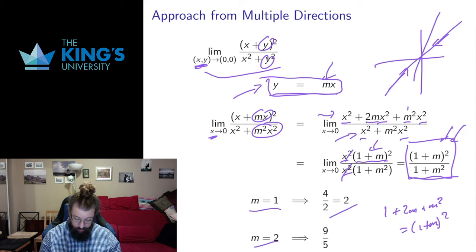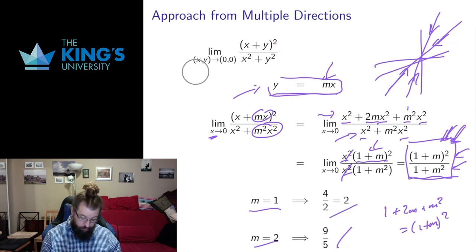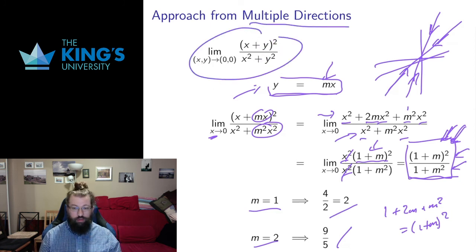But what happens if I approach on a steeper line, a line of slope 2? Well then if I put 2 in for m here, I get 9 fifths, which is different. And if I put different values for m, I've got infinitely many slopes I can choose. They're almost all going to be different when I put m in the expression. I'm not going to get the same expression here. What this tells me is that this original function, this limit depends on the direction of approach. I'm going to get different values for the limit depending on which direction I approach it.